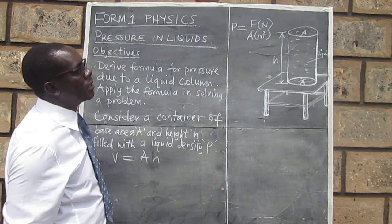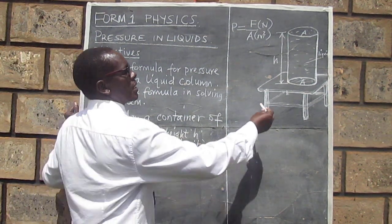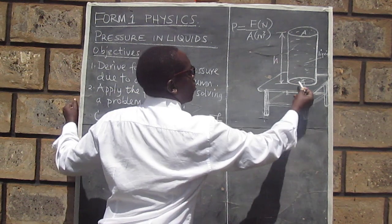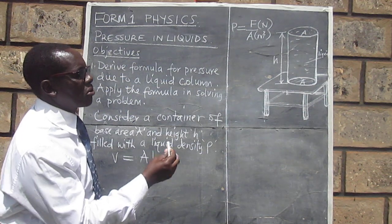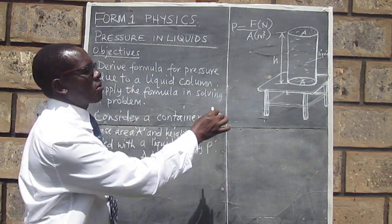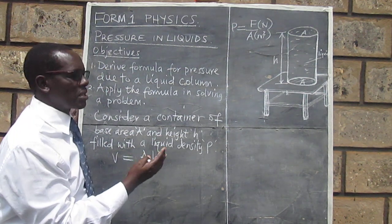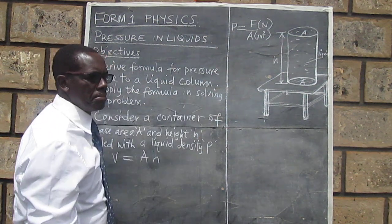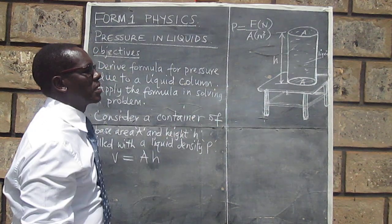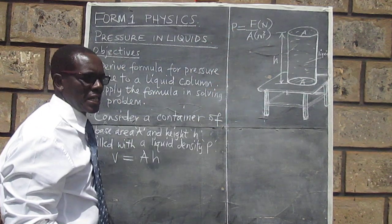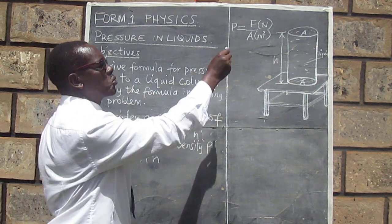Now, from the formula, we require to know the force that the liquid is exerting on the surface of the table. Note that we have not considered the force the container also exerts — our focus is only on the liquid column. We are aware that the container is also exerting a force, and we know that atmospheric pressure is also acting, but we are concentrating on the pressure due to the liquid column only.